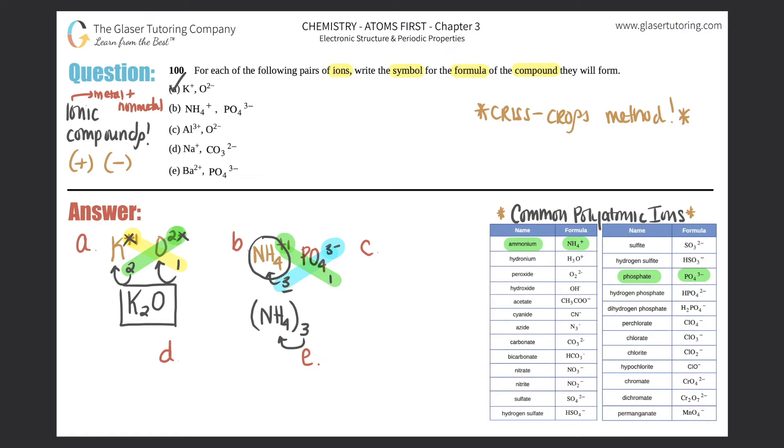You only use parentheses when you have more than one polyatomic. You never use parentheses for just regular atoms, only for polyatomics. Since you only have one of the phosphates, you don't need parentheses, so it would just be PO4. Box your answer off - that's the answer for b: (NH4)3PO4.